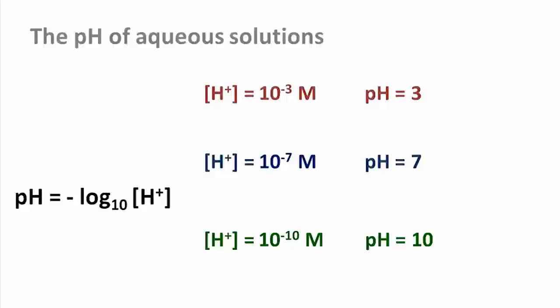Bear in mind the logarithmic relation between the numbers. The proton concentration at pH 7 is 1000 times higher than at pH 10, and 10,000 times lower than at pH 3.